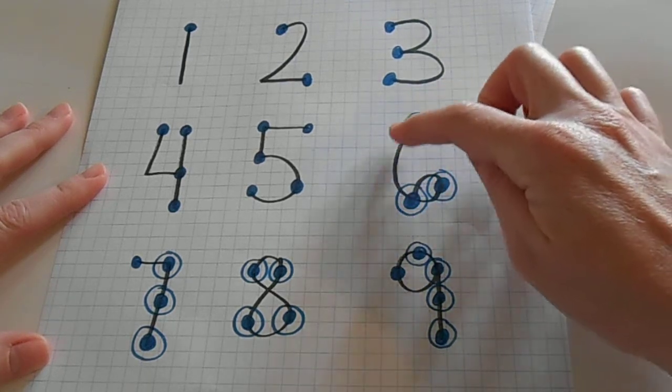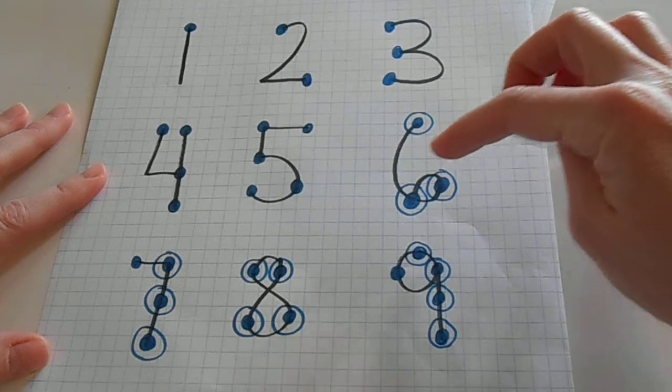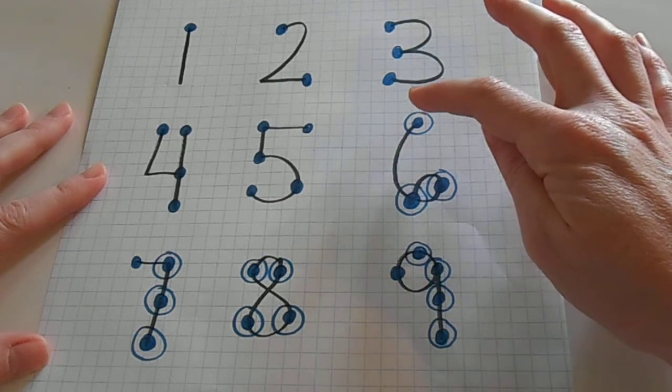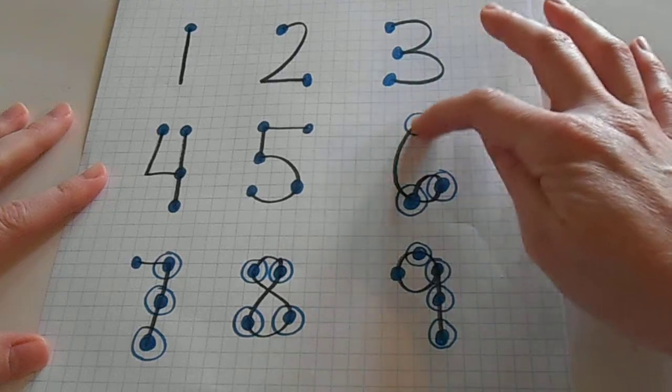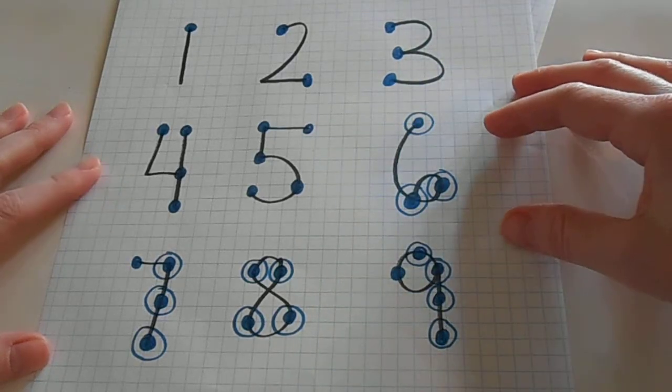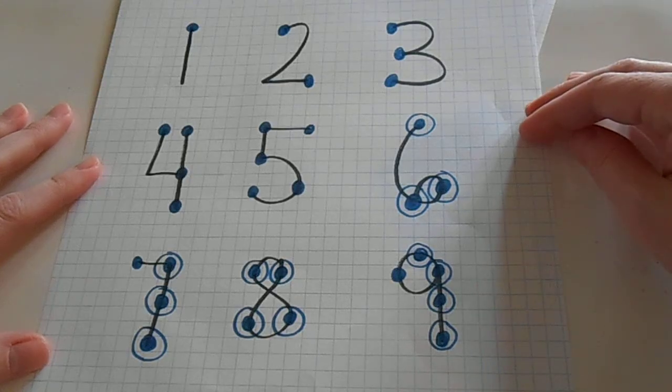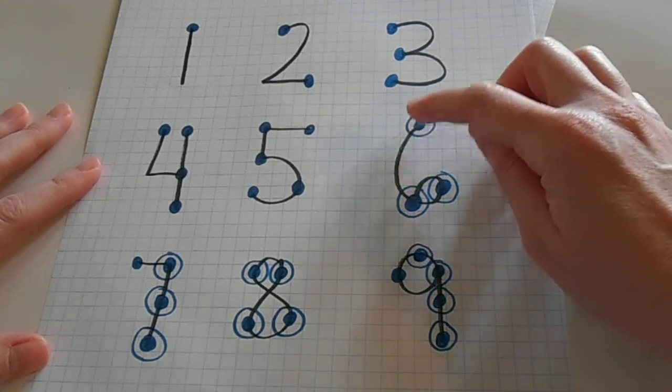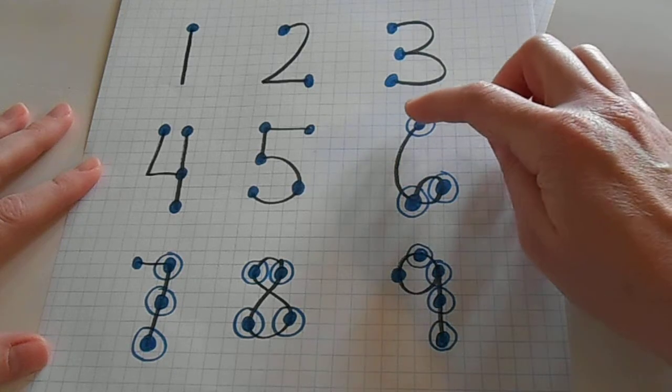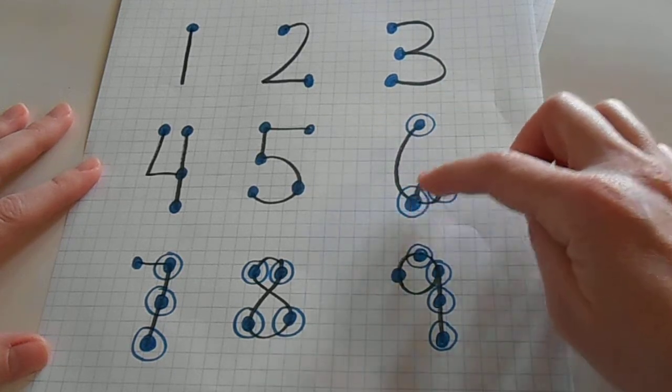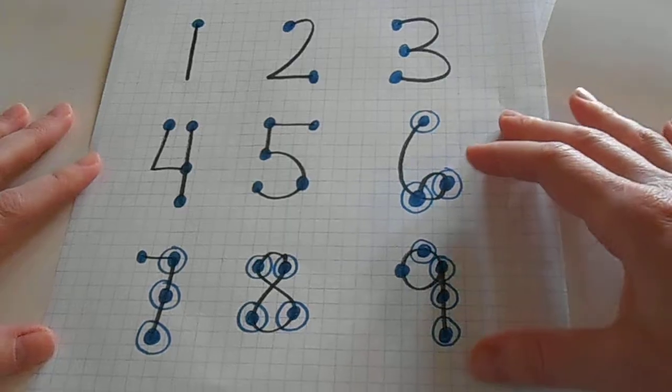Instead of drawing six solid dots along the number, we've drawn a solid dot in the middle and then circled it with an outer dot. And kids who are learning how to use touch math will quickly learn that this means count it twice. So in order to count the number six, they would count one, two, three, four, five, six, and count that way.